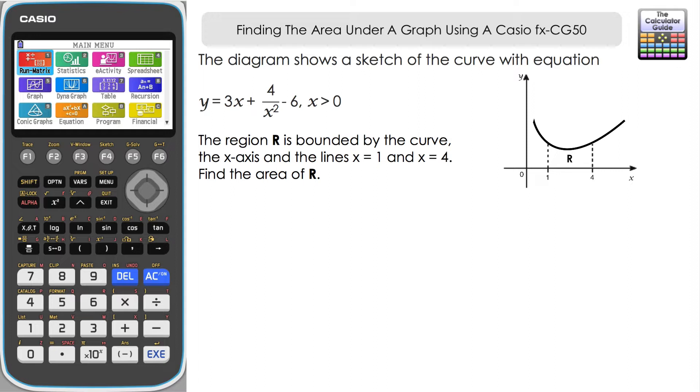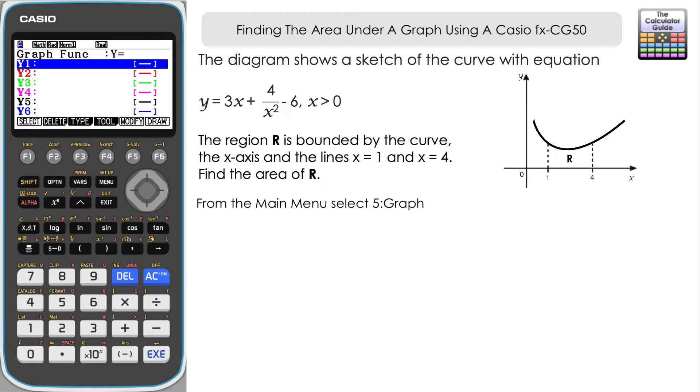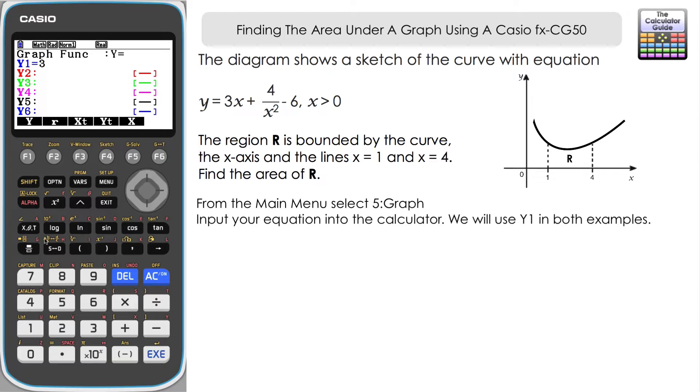So the first thing is to get the calculator to draw a graph of the function here. If we navigate down to choice 5 from the menu, Graph, and then I'm just going to use Y1 for this, in fact for both examples that we do, and let's just input the function then. So 3x plus 4 over x squared minus 6. We won't worry about greater than 0; the calculator will deal with that element for us.